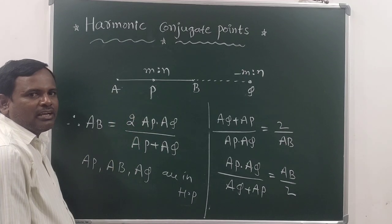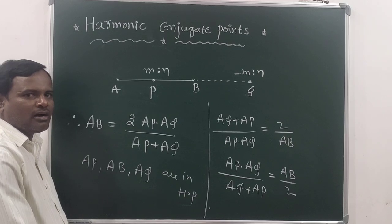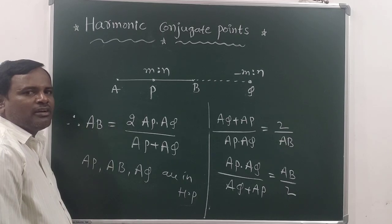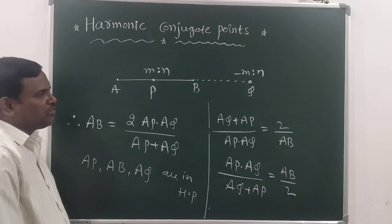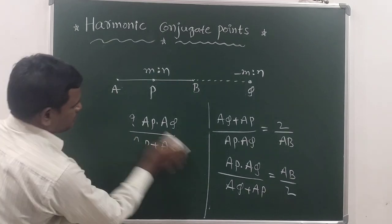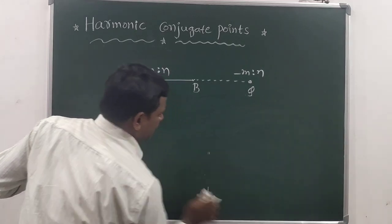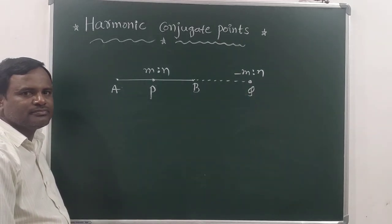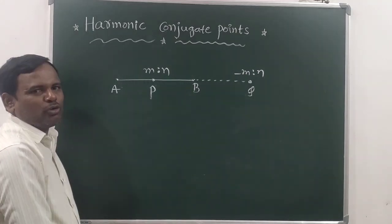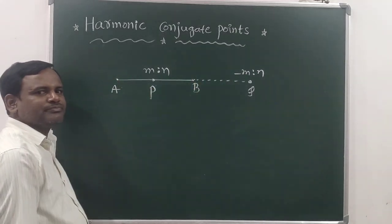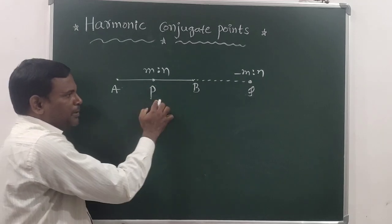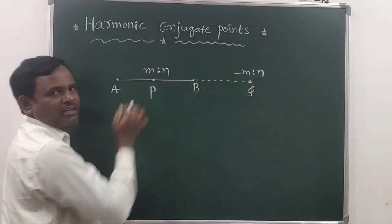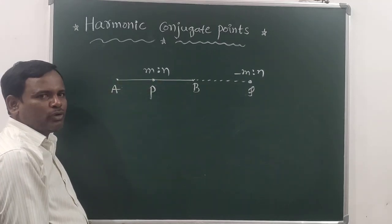We can expect one more question from this diagram. With respect to line segment AB, P and Q are harmonic conjugate points. But with respect to line segment PQ, A and B are also called harmonic conjugate points. Remember this point.